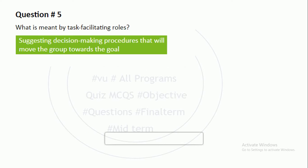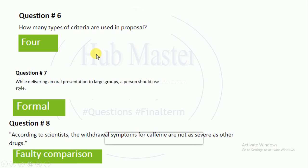How many types of criteria are used in a proposal? There are four types of criteria in the proposal. While delivering an oral presentation to large groups, you should use formal style — an oral presentation means you are just talking and presenting without a slide or PowerPoint.